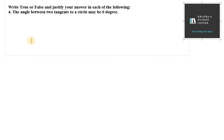Hello everyone, let's start with question number 4 of exercise 9.2. So it says the angle between two tangents to a circle may be zero degree.